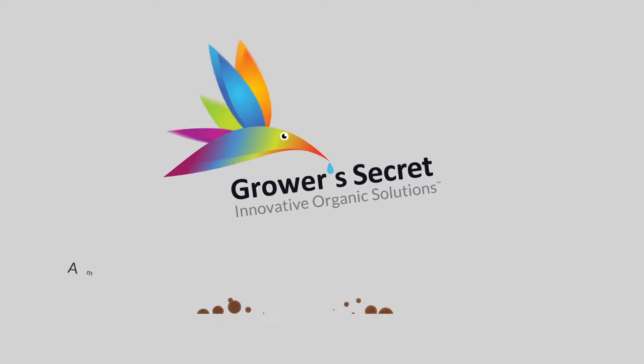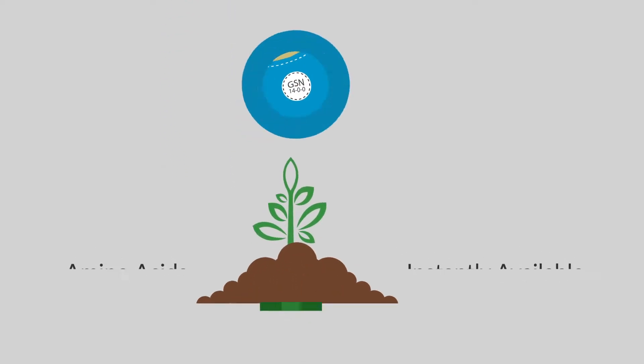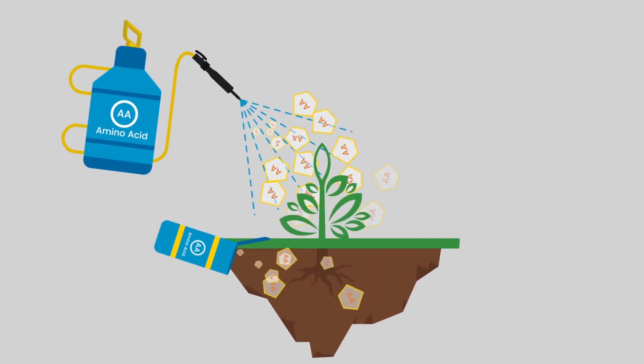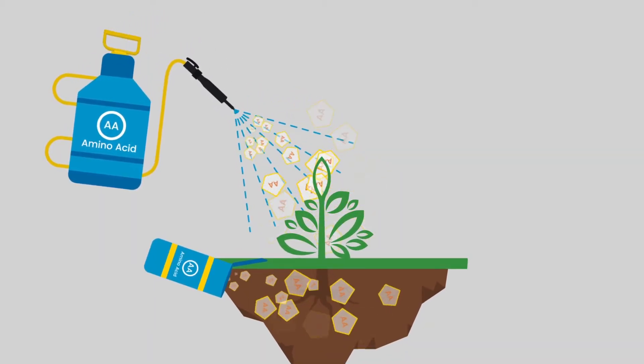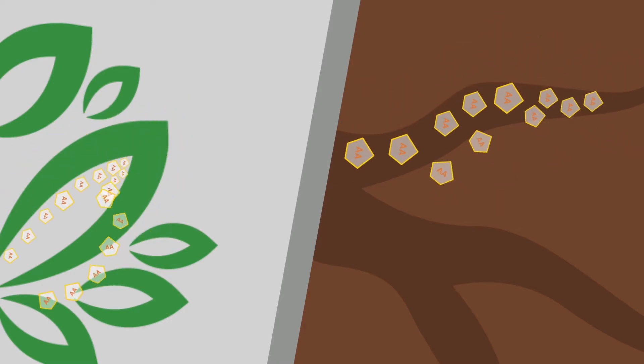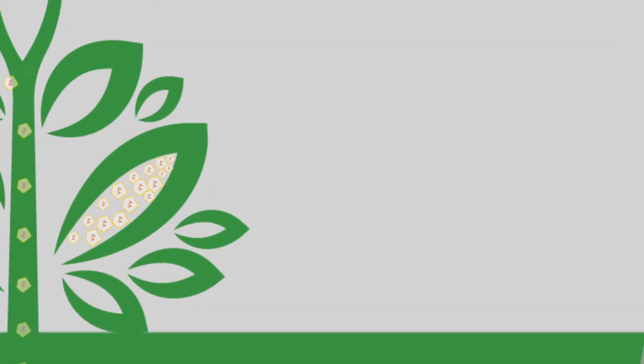Grower's Secret Nitrogen is a more efficient solution. A foliar spray or soil application of amino acids is immediately available everywhere the plant needs it. So there's less waste and no waiting for it to change in the soil.